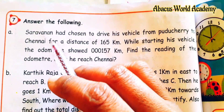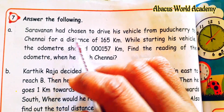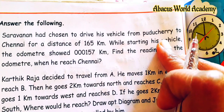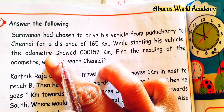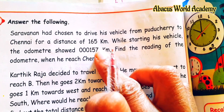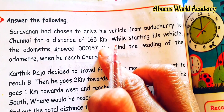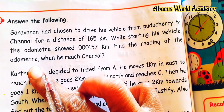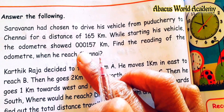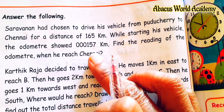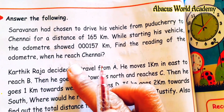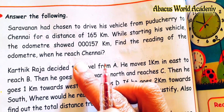Answer the following. Saranand had chosen to drive his vehicle from Puducherry to Chennai for a distance of 165 km. While starting his vehicle, the odometer showed 000157 km. Find the reading of the odometer when he reached Chennai.